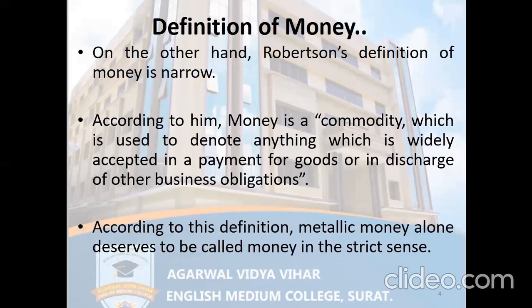According to Robertson's definition, metallic money alone deserves to be called money in the strict sense. That means only those things which are tangible will be considered as money. He considered metallic money alone as money in a very strict sense.